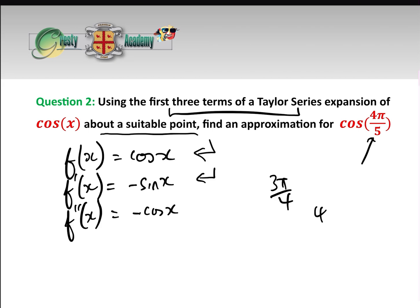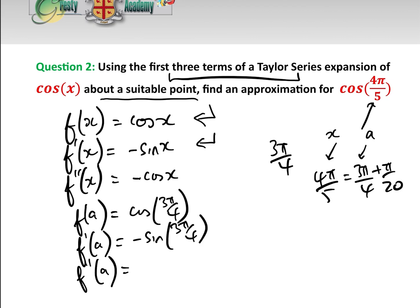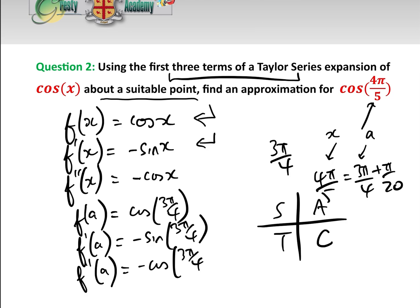So 4π over 5 equals 3π over 4 plus π over 20, and we let x equal 4π over 5 and a equal 3π over 4. We need f of a equals cos of 3π over 4, f dashed of a equals minus sine of 3π over 4, and f double-dashed of a equals minus cos of 3π over 4. Using the ASTC rule, cos of 3π over 4 is minus 1 over root 2, minus sine of 3π over 4 is minus 1 over root 2, and minus cos of 3π over 4 equals 1 over root 2.